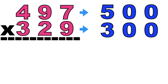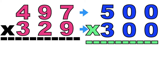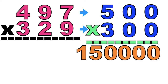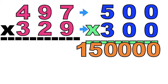So we can now multiply them. As you can see, we have four zeros to the right, so we're going to write four zeros at the bottom. Then let's multiply the non-zero digits. We have 3 times 5 equals 15. So the estimated product of 497 and 329 is 150,000.